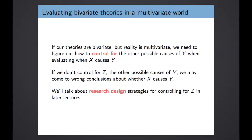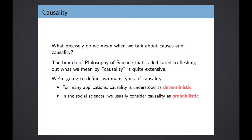In the next couple of lectures we're going to be talking about research design strategies that let us control for z — that let us take these other variables into account when looking at the relationship between x and y. But first, at the end of this lecture, we're going to talk about what exactly we mean when we talk about causes and causality. We've been using the language of x causing y, y causing x, or z causing y — but what exactly do we mean by causality?